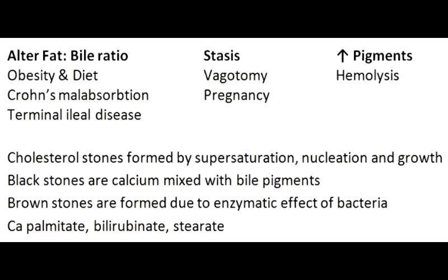Change in the ratio of phospholipids, bile acids, and cholesterol leads to supersaturation of cholesterol, followed by nucleation and finally growth of the cholesterol stone. Increased bile pigments lead to black stones, which contain calcium mixed with bile pigments. In the presence of infection and bacterial enzymes — glucuronidase and phospholipase — brown stones get formed. They contain calcium palmitate, calcium bilirubinate, and calcium stearate with cholesterol. The etiology of gallstones includes obesity with increased fat consumption changing the ratio, pregnancy with progesterone causing stasis, Crohn's disease and terminal ileal disease leading to dysfunction of enterohepatic circulation, hemolytic diseases overwhelming the metabolic capacity of the liver, and gastric surgery with vagotomy causing stasis.